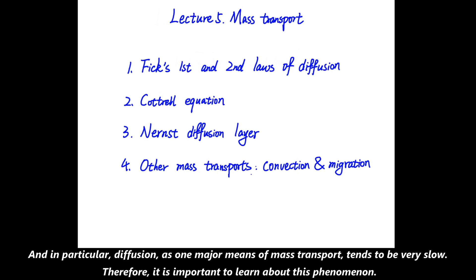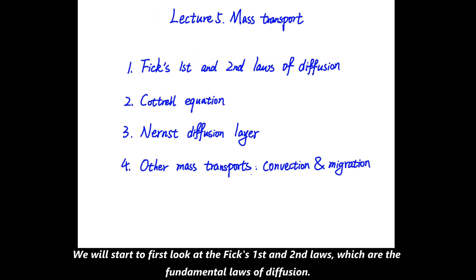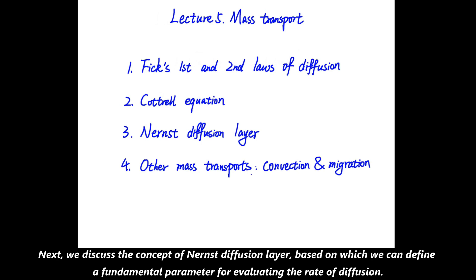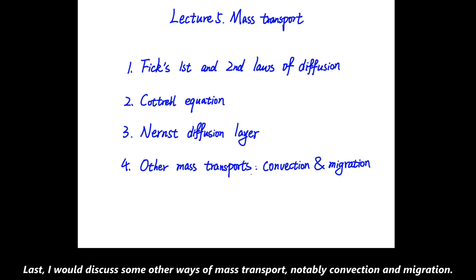Therefore it is important to learn about this phenomenon. We will start to first look at Fick's first and second laws, which are the fundamental laws of diffusion, and then based on these two laws, we derive the Cottrell equation to show our prediction on the current potential behavior when the mass transport is the rate determining step. Next, we discuss the concept known as the Nernst diffusion layer, based on which we can define a fundamental parameter for evaluating the rate of diffusion. And last, I will discuss some other ways of mass transport, notably convection and migration.